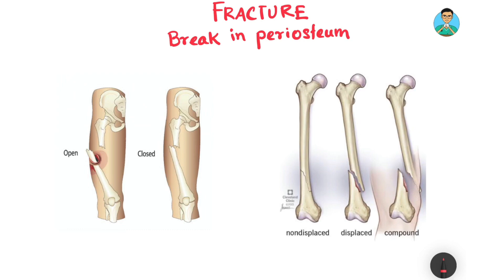Now, grossly, think about what can happen. A bone can break and both bone fragments can stay within the boundaries of the soft tissue. That type of fracture is known as a closed fracture. We represent fracture by a hashtag symbol — for example, a femur fracture would be written as hashtag fracture femur.